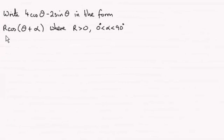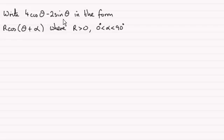Hi, now for this question we're being asked to write 4 cos theta minus 2 sine theta in the form r cos theta plus alpha, where r is greater than 0 and alpha is an acute angle between 0 and 90 degrees.